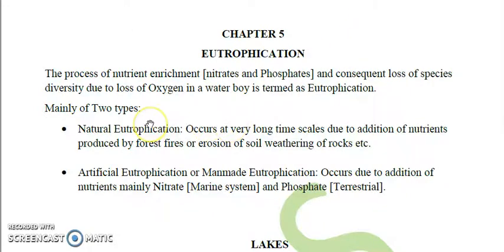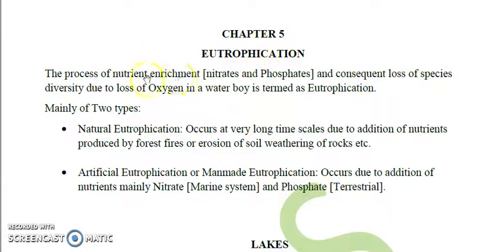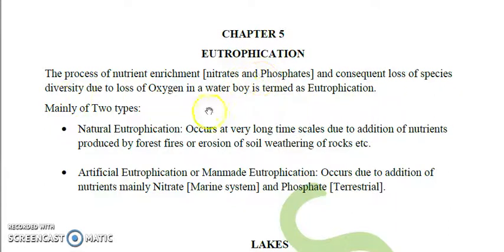Eutrophication — where 'eu' means food or nutrition — is defined as the process of nutrient enrichment, especially nitrate and phosphate, and the consequent loss of species diversity due to lack of oxygen in a water body.